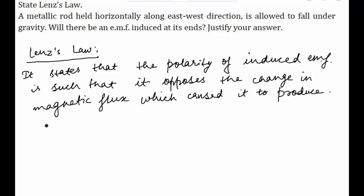The second part states that a metallic rod is held horizontally along the east-west direction — this is east and this is west — and is allowed to fall under gravity. Will there be an EMF induced at its ends? Justify your answer.